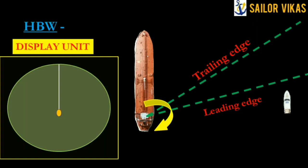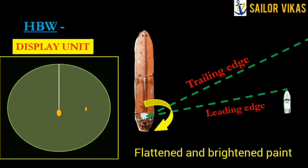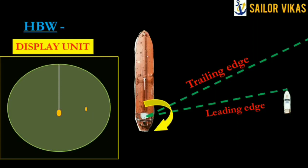The radar beam has four sides: upper edge, lower edge, leading edge, and trailing edge. Whenever the leading edge hits a target, echoes are received by the receiver, and as soon as those echoes begin returning, a paint appears on the radar screen — a flat, bulged, and brightened paint caused by the received echo.